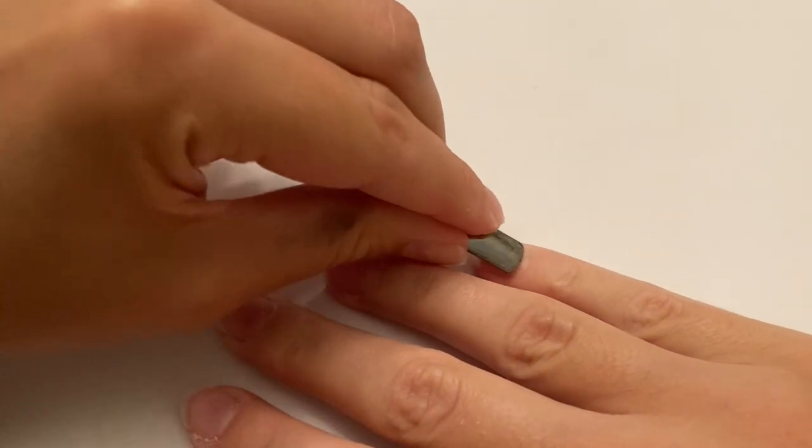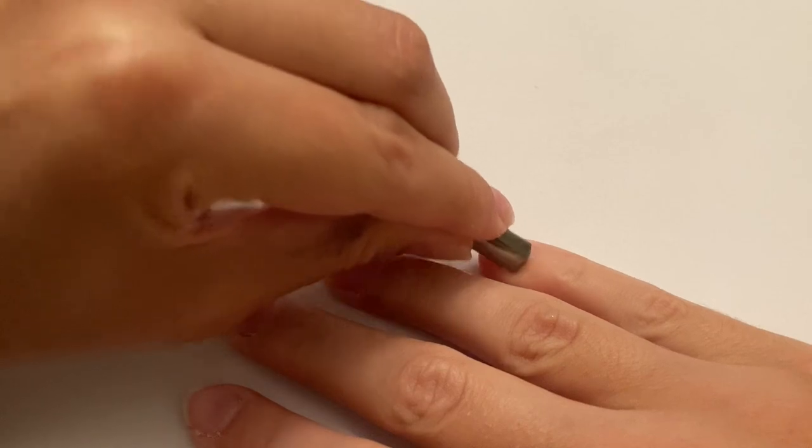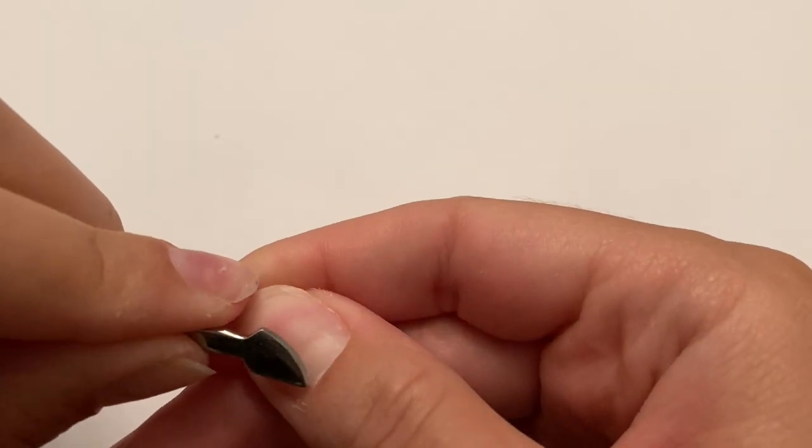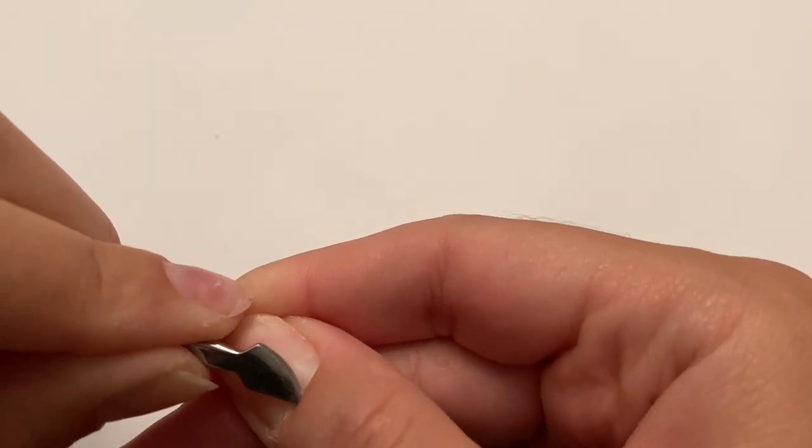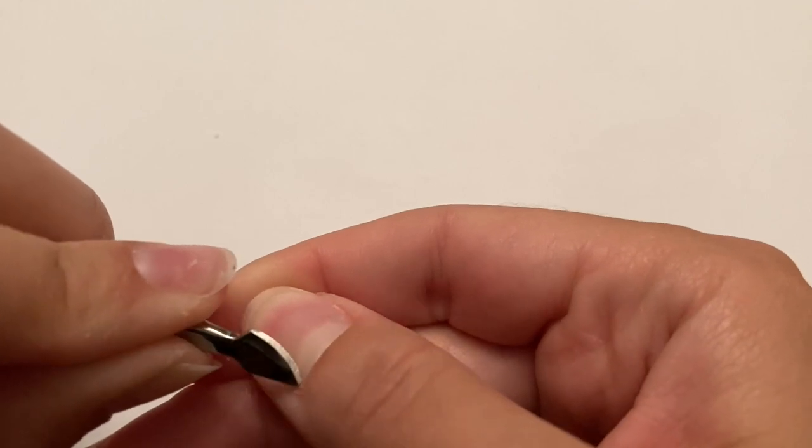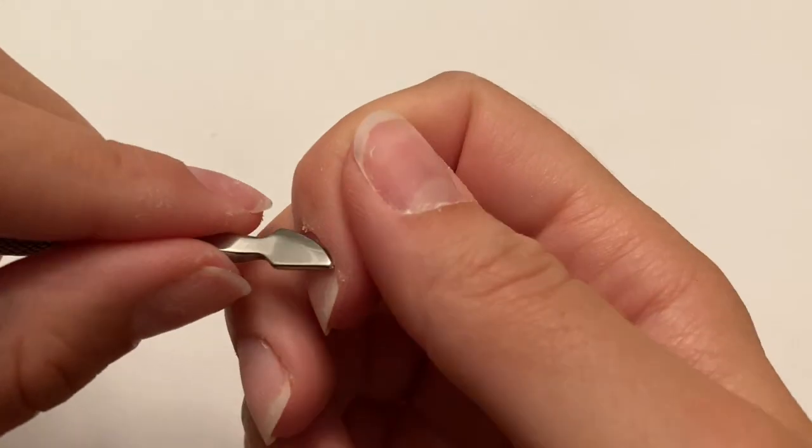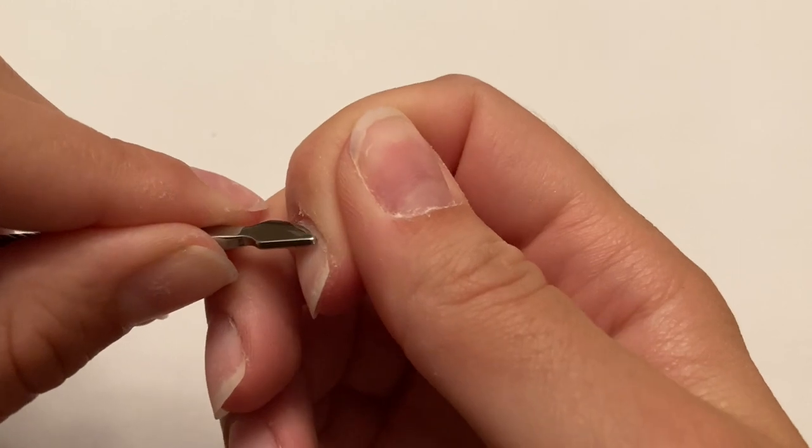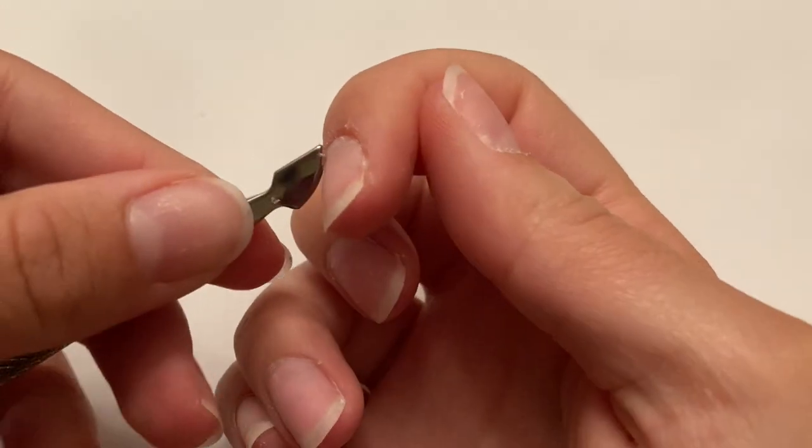this will make it easier for the gel polish to peel off rather than if the gel polish was just applied to your buffed natural nail. I do prep my nails a lot, so I did not have a lot of cuticles or dead skin to push back.